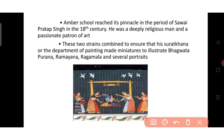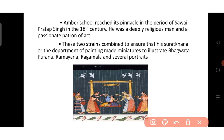The Amber school reached its zenith in the period of Sawai Pratap Singh in the 18th century. He was a deeply religious man and a passionate patron of art. These two qualities combined to ensure that his Surakana, or Department of Painting, made miniatures to illustrate the Bhagavata Purana, Ramayana, Ragamala and several other portraits.